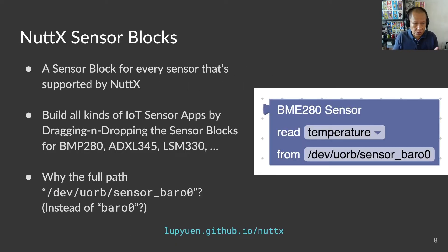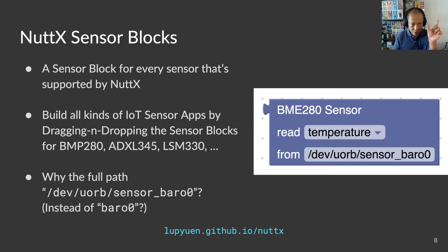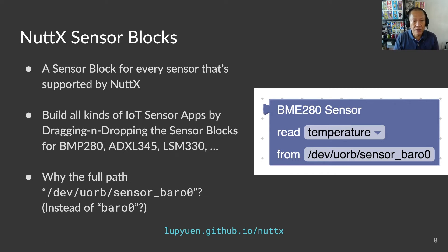Now imagine a classroom of students doing hands-on with NuttX and sensors for the very first time — temperature sensors, air quality sensors, accelerometers, GPS. What is the quickest way to get them on board? Let us create a block for every sensor that's supported by NuttX. Just pick the sensor block and drop it into the visual program. NuttX will handle the plumbing for our students — how to encode data and push the data to the cloud. But will our students understand how NuttX works? That's why we review selective details, like sensor devices actually located at /dev/uop, so our students will learn this for troubleshooting sensors later.